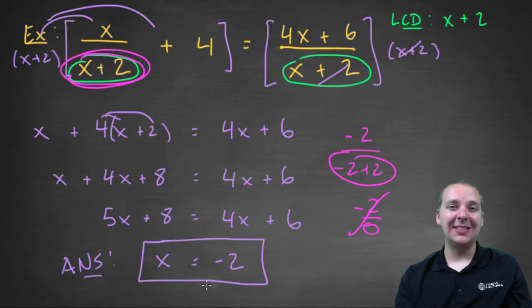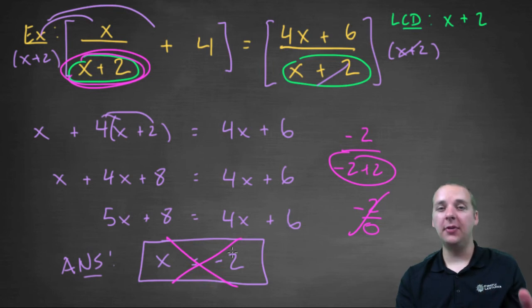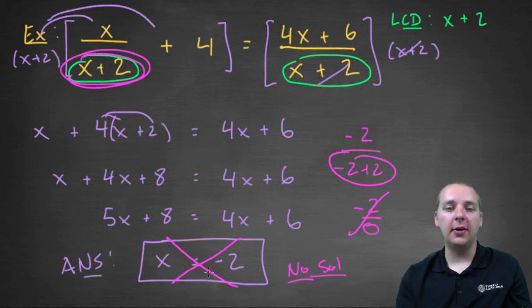Since it's not allowed, since it's an extraneous solution, we have to toss it out like it was never even there, so this particular equation has no solution. If we had gotten x equals negative 3, or x equals 7, or x equals 19, or any other number, that would have been our solution. But because it equaled negative 2, this one doesn't have a solution.